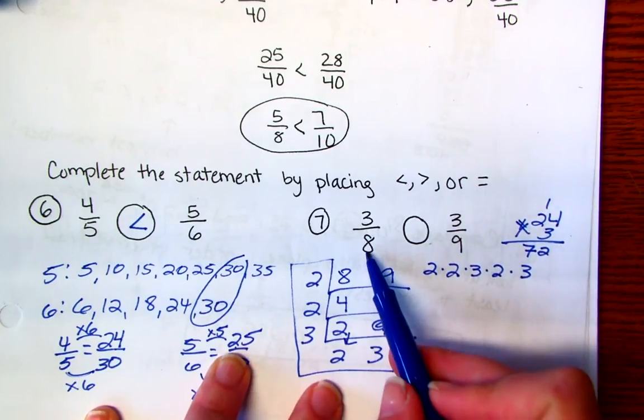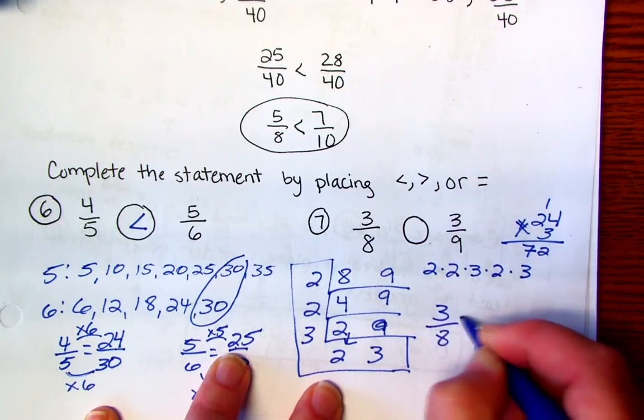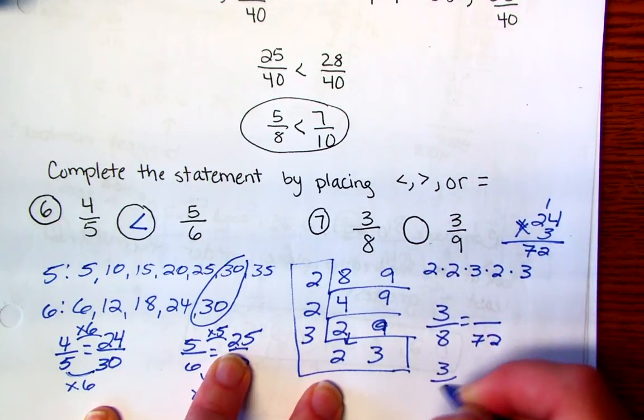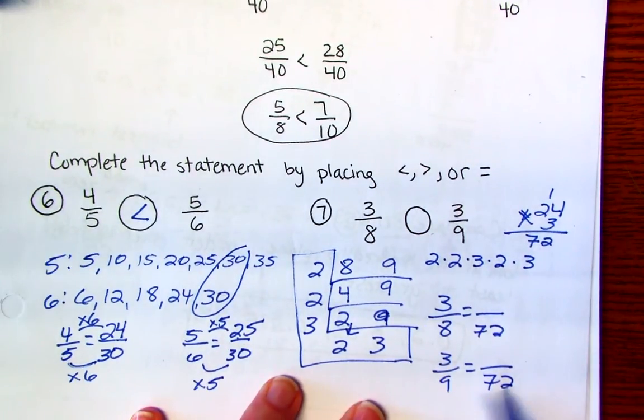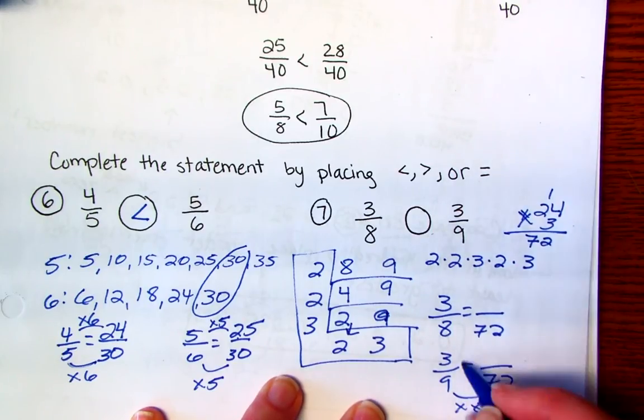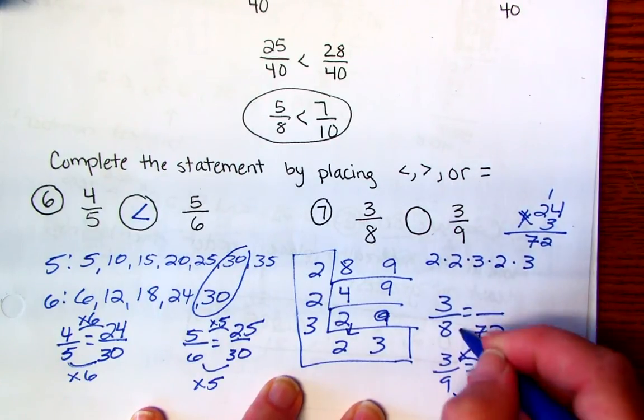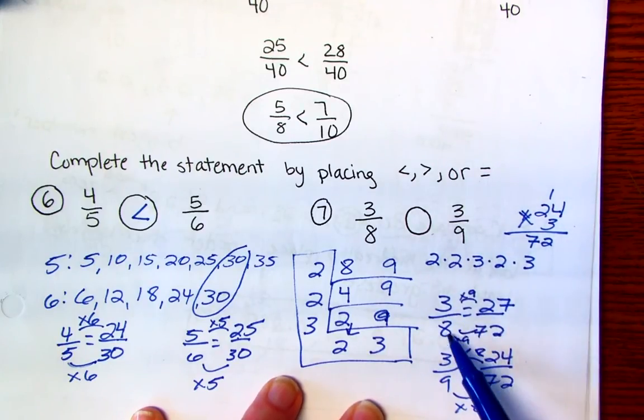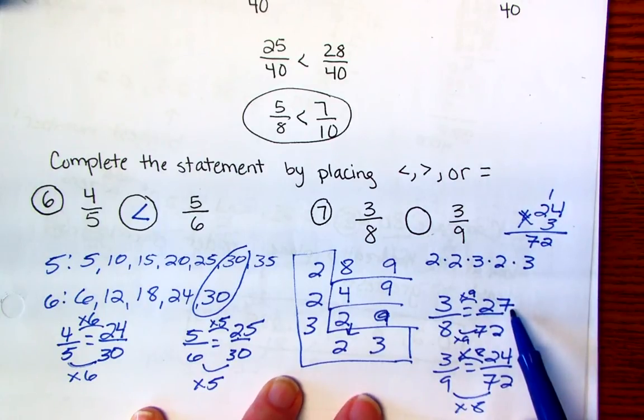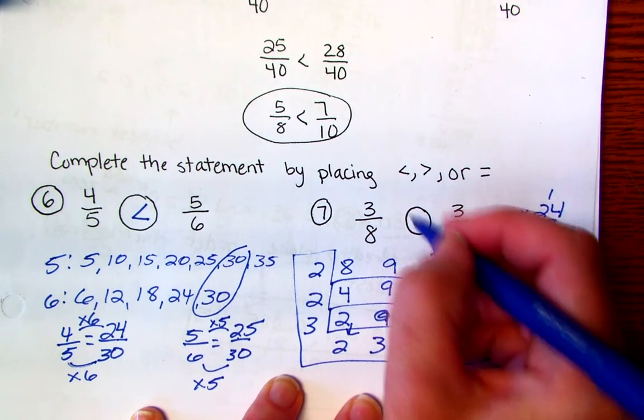So you might have already seen this in 8 and 9. Your common denominator is going to be 72. So 3 eighths needs to have a denominator of 72, and 3 ninths needs to have a denominator of 72. So 9 times 8 gives you 72. 3 times 8 gives you 24. And then 8 times 9, 3 times 9 gives you 27. So if I'm comparing 3 eighths and 3 ninths and comparing their equivalent fractions, 27 over 72 and 24 over 72, I can look at my numerators. 27 is greater, so this one's going to be greater than.